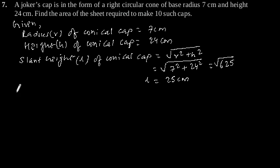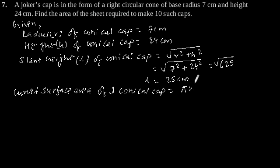Curved surface area of one conical cap equals π r l. Putting the values, we get 22/7 × 7 × 25, which equals 550 cm squared.